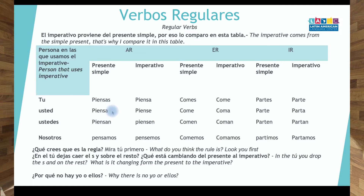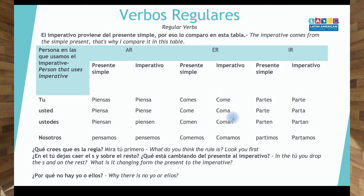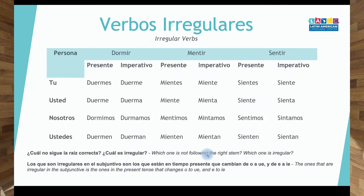So you have in present tense: 'piensas,' 'piensa,' 'piensan,' 'pensamos.' The imperative is: 'piensa,' 'piense,' 'piensen,' 'pensemos.' What is going on with 'tú' compared to the present tense? It's taking out the S. You can see — taking out the S in 'tú.' And for 'ustedes' and 'nosotros,' it changes A to E. So for AR verbs, it changes A to E. For ER and IR verbs, it changes E to A. That's the regular verb pattern.